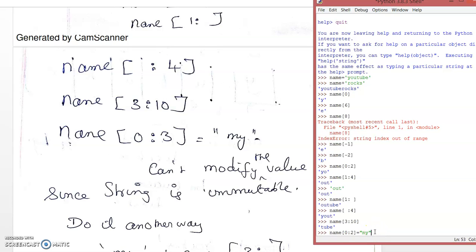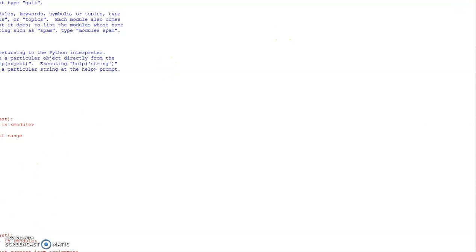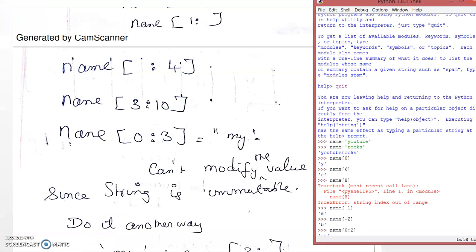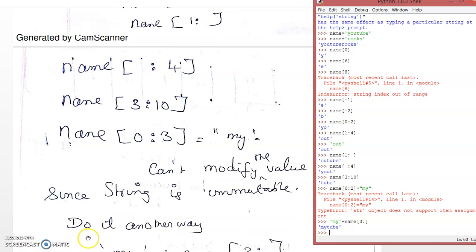Since the string is immutable, we can't modify the value directly. It will throw an error: 'object does not support item assignment'. But we can modify it in another way — by concatenating. For example, to print 'myTube' instead of 'YouTube', I concatenate 'my' plus name[3:] — that prints 'myTube'.